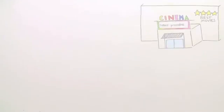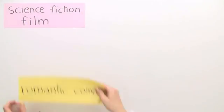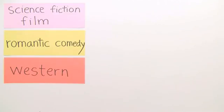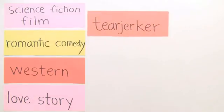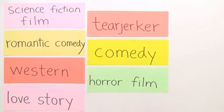We'll start with the different types of movies. Do you know all the following words? Science-fiction film, romantic comedy, western, love story, tearjerker, comedy, horror film. They all describe movies.